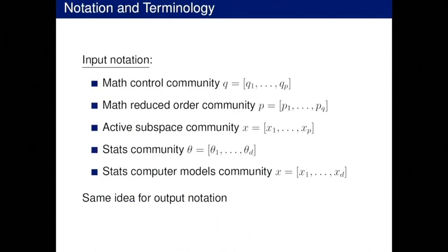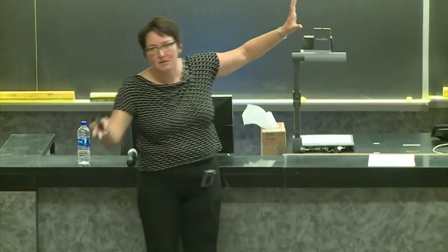On notation — I stole this slide from Ralph, but I think it's instructive because different communities use different notation to talk about inputs. In the math control community, Q goes from 1 to P. In the reduced order community, P goes from 1 to Q. Active subspaces uses X from 1 to P. In statistics, we like thetas, so theta from 1 to D. In computer models, inputs are X's from 1 to D. It's important to recognize that when people use the same words, the notation might not match what you know.